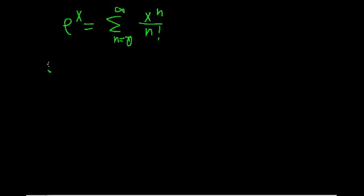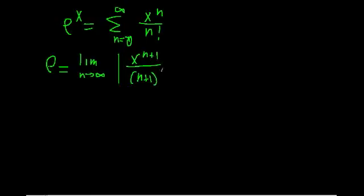So we're going to see that rho equals the limit as n approaches infinity of the n+1 term, which will just be x^{n+1} over (n+1)!, all divided by the a_n term, which will just be x^n over n!.